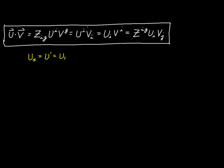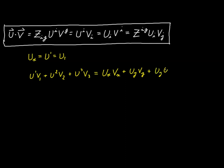Let's take a look at the expression u^i v_i first. That expands out to u^1 v_1 plus u^2 v_2 plus u^3 v_3. Replacing u^1 with u_x, v_1 with v_x, and similarly for the other components, we get u_x v_x plus u_y v_y plus u_z v_z — which you'll recognize immediately as the expression for the dot product in Cartesian coordinates.